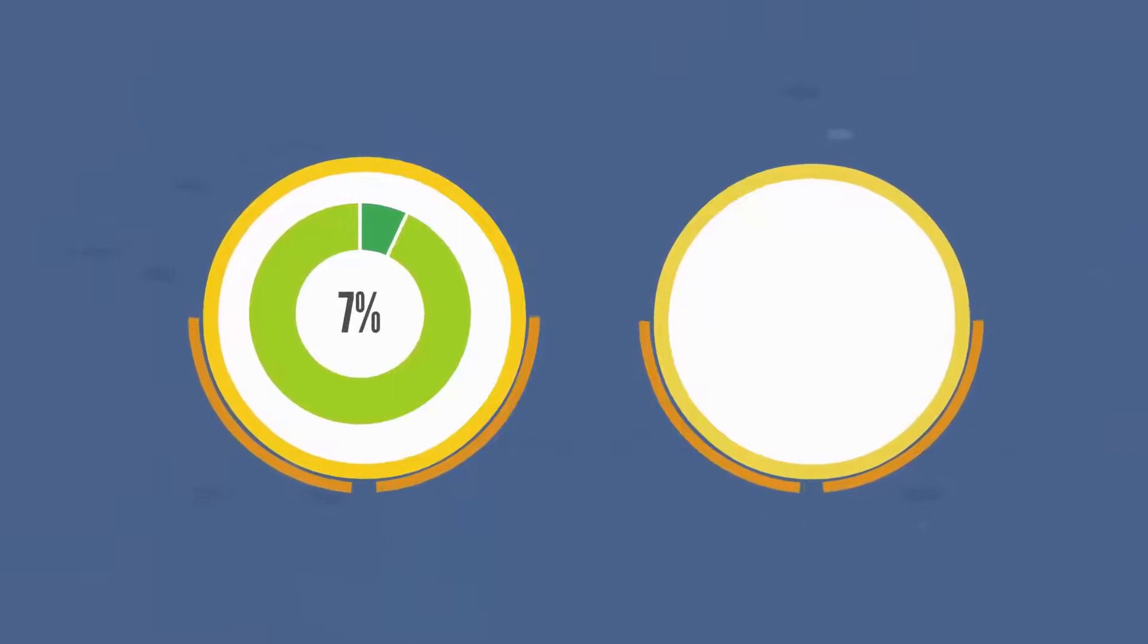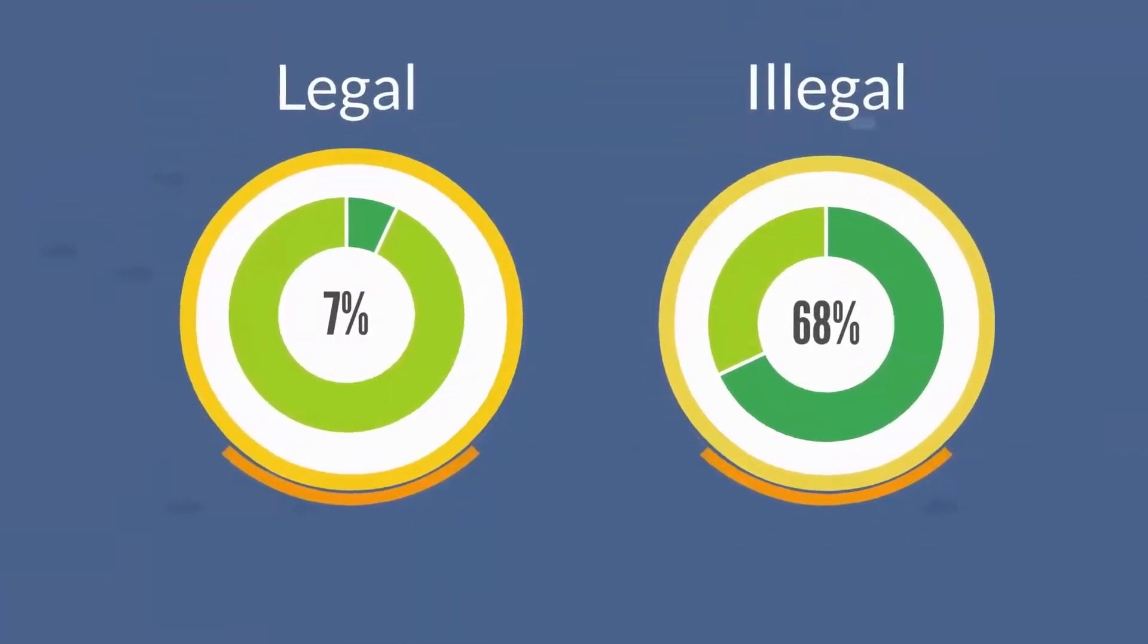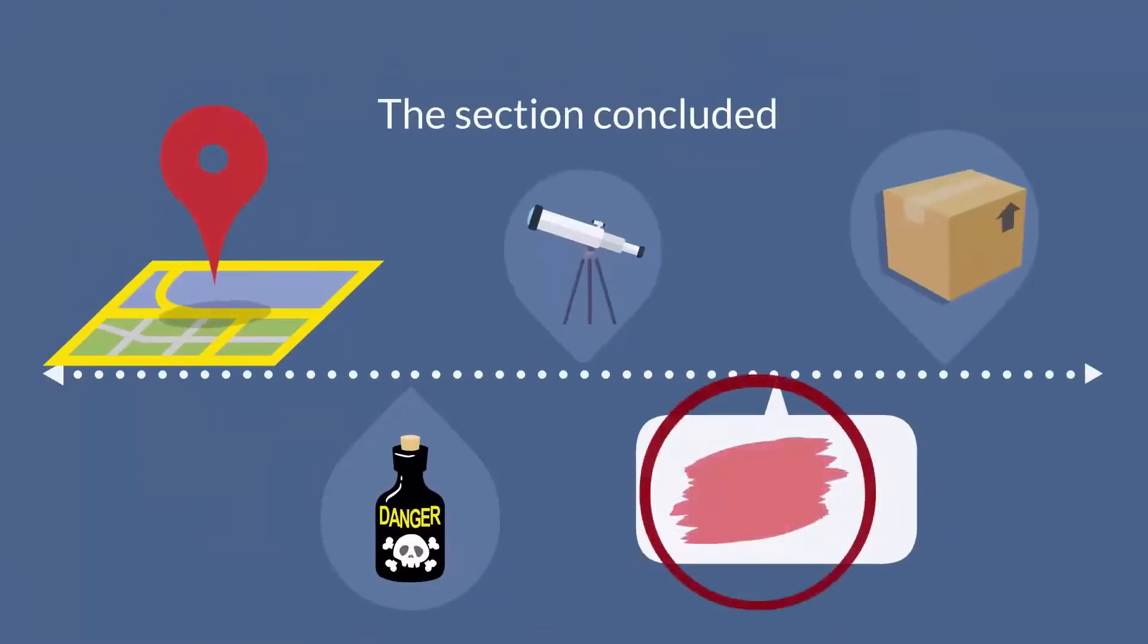Furthermore, about 7% of legal pigments and about 68% of illegal pigments were not declared on the product labels. The section concluded that their findings were indicative of label forgery taking place somewhere along the supply line and highlighted the urgent need to review marketing and import procedures.